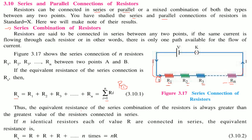The equivalent resistance of a series combination is always greater than the greatest individual resistor value. If n identical resistors each of resistance R are connected in series, you can replace R1, R2... Rn all by R, so the total resistance will be n times R.